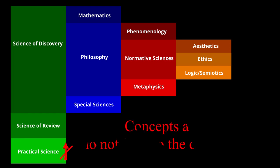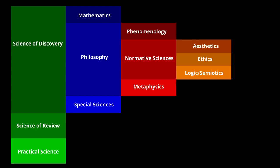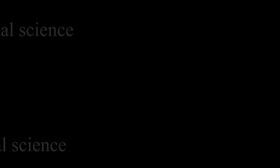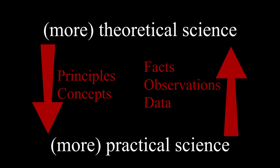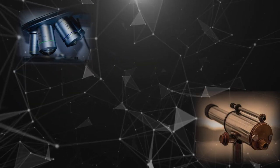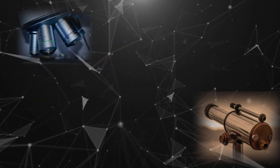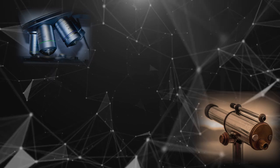The opposite is not true — mathematics does not need concepts from other sciences. Mathematicians do not need concepts like cell, gravity, instinct, or consciousness. But this does not mean mathematics is indifferent to other sciences. Although concepts and tools flow only from the more theoretical to the more practical science, the more practical science provides in turn facts and observations to the more theoretical ones. Therefore, new observations by other sciences may demand mathematicians to form new mathematical theories, though usually mathematics is one step ahead with many theories that for now have no practical purpose.